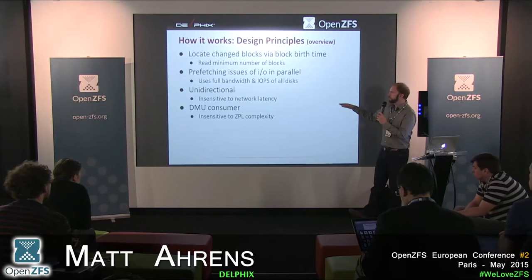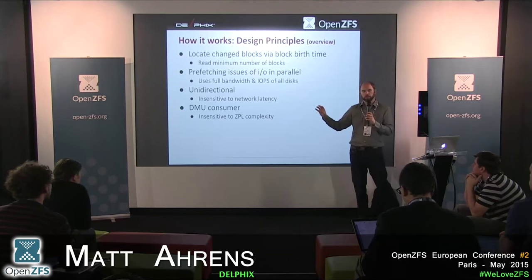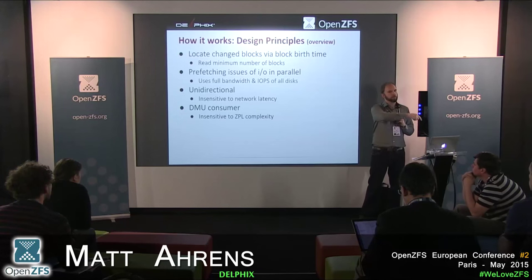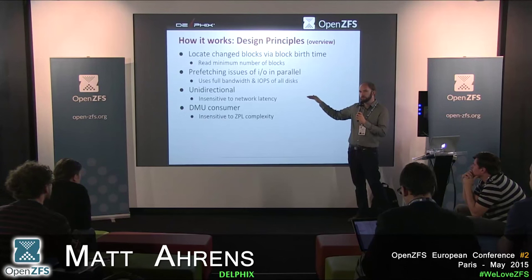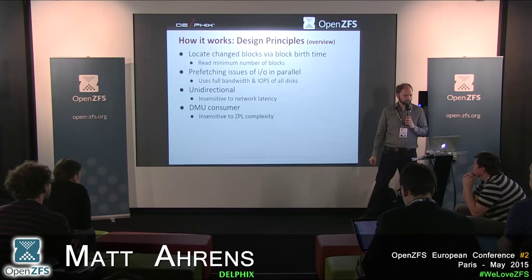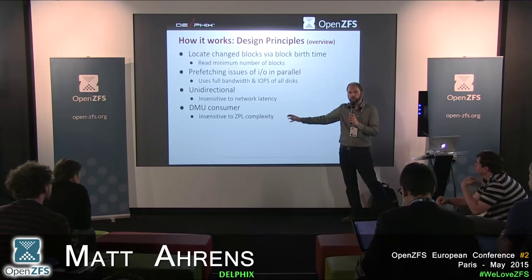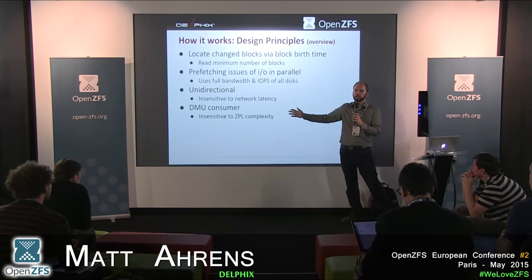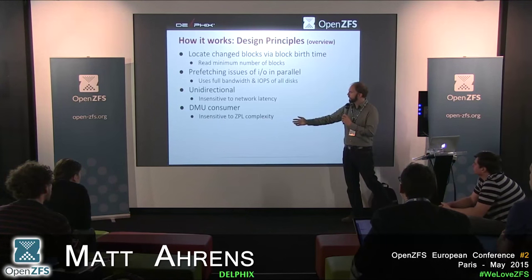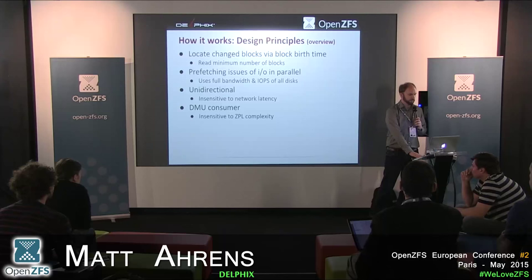ZFS send and receive is unidirectional — we only send data from the sender to the receiver; the receiver doesn't send any information back. This means we can go at the full bandwidth of a TCP connection or whatever your underlying transport is. And it's built on top of the DMU, so any complexity implemented in the ZPL or ZVOL layers is naturally abstracted out and we don't have to worry about it in ZFS send and receive.